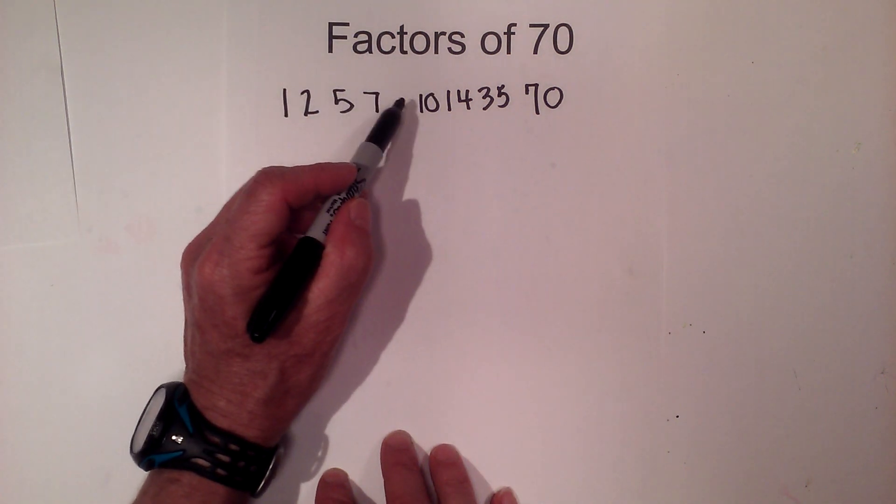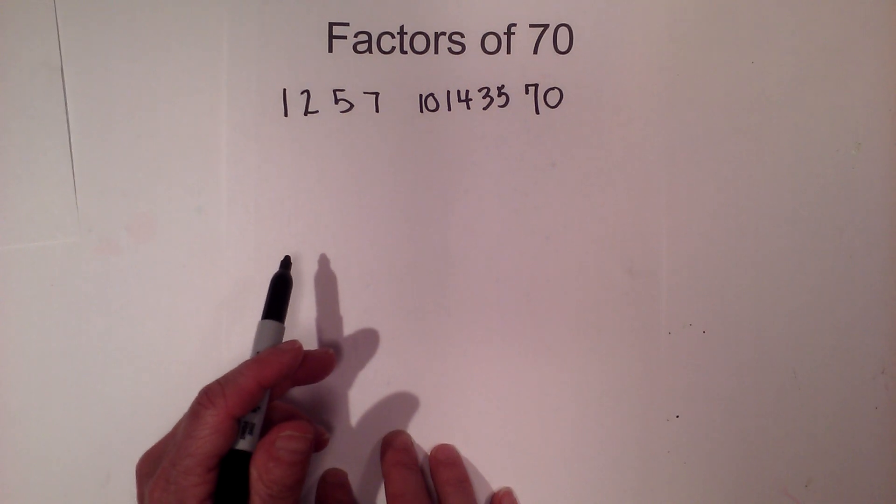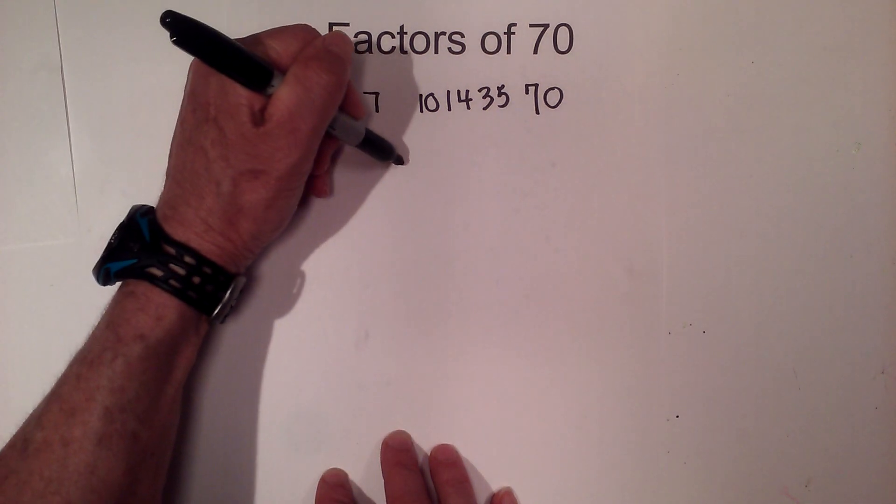So I am finished now with the factors. Okay, next let's find the prime factorization of 70.